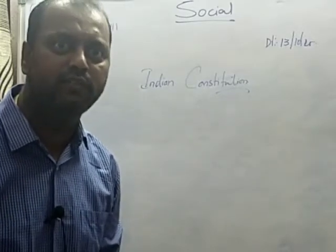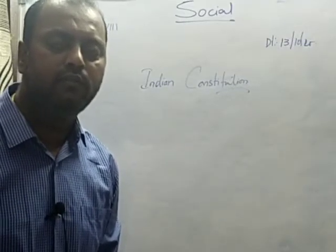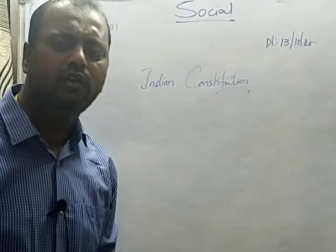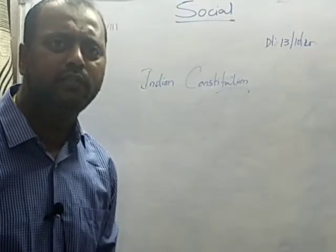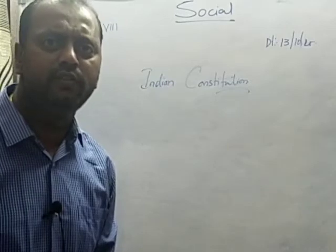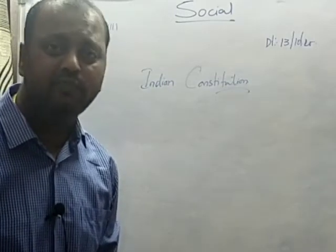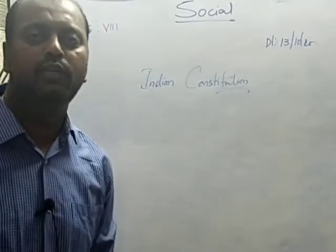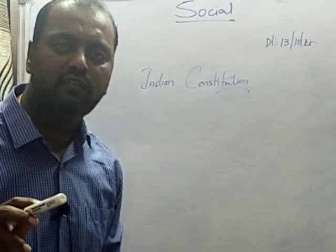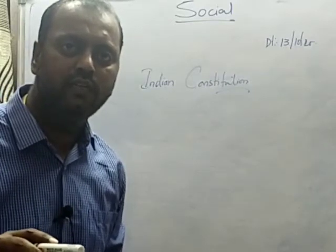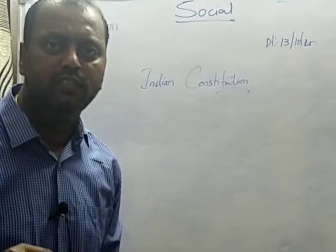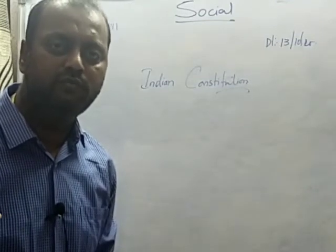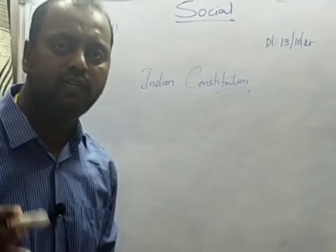Why a constitution is required, we also tried to understand. So we understand that the constitution is a book of rules and regulations about how the government should be formed, how the president and prime minister get elected, what are the rights of the citizens, and what are the goals of a country. This draft constitution was adopted on November 26th, 1949 by the Constituent Assembly, and the same constitution came into enforcement on January 26th, 1950.